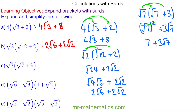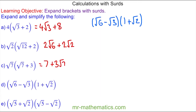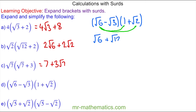Let's move on to question D. Again we're going to multiply each of the outside terms by each of the inside terms. We begin with root 6 multiplied by positive root 2, which gives root 12, since 6 times 2 is 12. Then we have negative root 3 times 1, which is minus root 3, and negative root 3 times root 2, which is negative root 6.